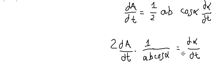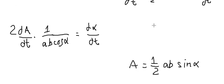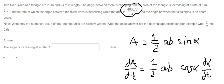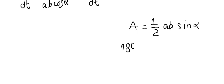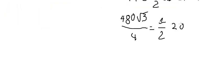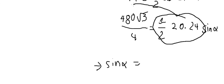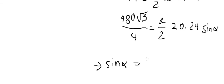Now we need to find cosine alpha. Going back to the area formula, we substitute the given area and the sides: A equals one-half times 20 times 24 times sine alpha equals 480 times 3/4. We solve for sine alpha — substituting all numbers — and get sine alpha equals the square root of 3 over 2, which means alpha equals pi over 3.